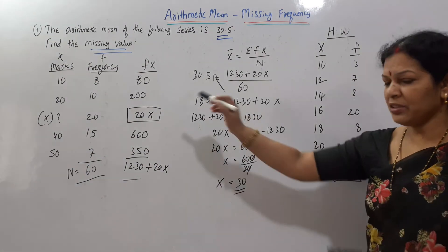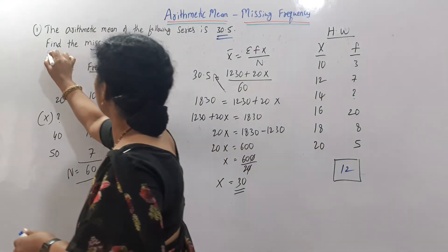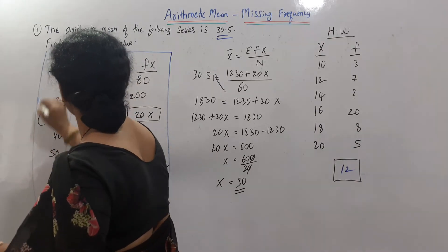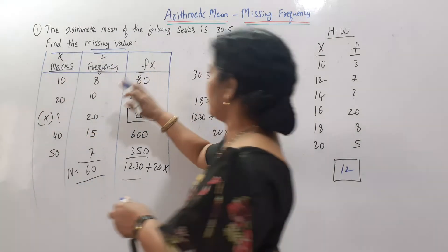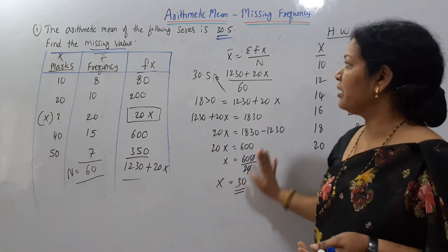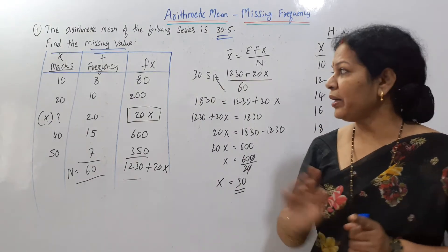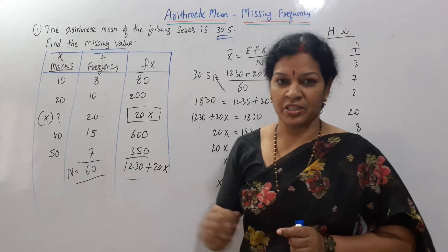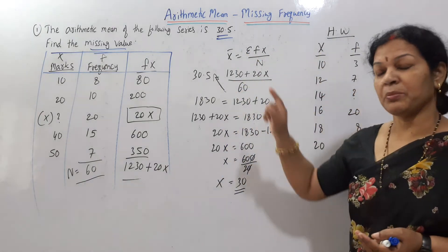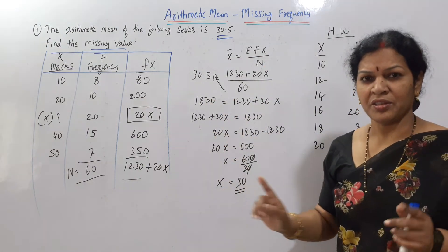Am I clear? By the way, we have to show this in a table — always use pencil and scale. So the table and calculations, there is nothing to worry. The key steps: first identify which series it is — discrete series. Then apply the formula X̄ = ΣFX / N, and we have done all the calculations. Did you follow?